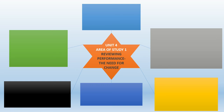This is a revision video for Unit 4, Area of Study 1, Reviewing Performance: The Need for Change. There are six dot points in this area of study, six things that you need to know about. With all these concepts, you also need to be able to connect to a contemporary case study, a scenario where a business has changed in the recent past.